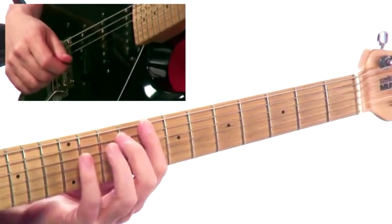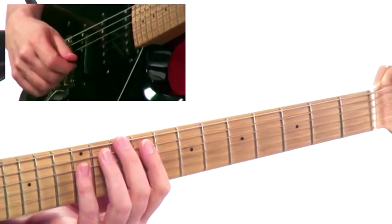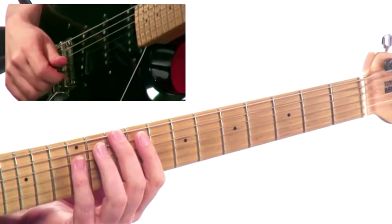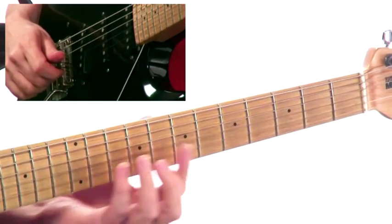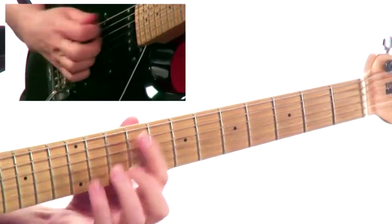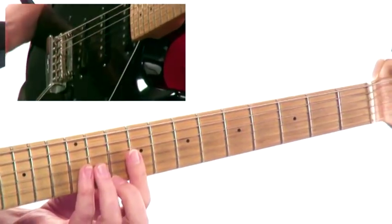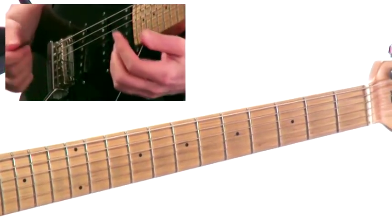So C major 7 arpeggio, but we've added 9. Now, a cool application of this is if you have a note that you want to start on, and we were ending on the high D here, so let's say you had a melody that you wanted to start on the D.